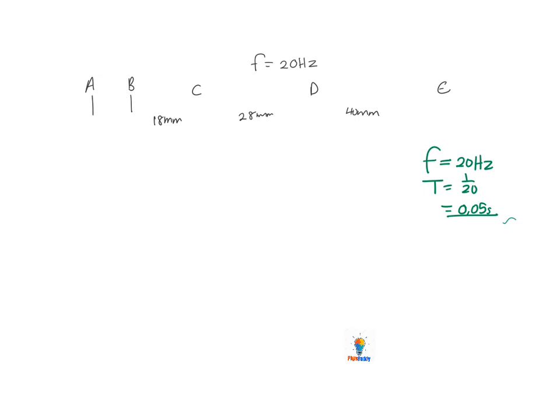They give us information about the frequency of the ticker timer, which is very important. The frequency is going to help us get the period. We know that period T is equal to 1 over f, which is 1 over 20, and we get 0.05 seconds. This means that it takes 0.05 seconds between successive dots, so I can mark that off on my tape.